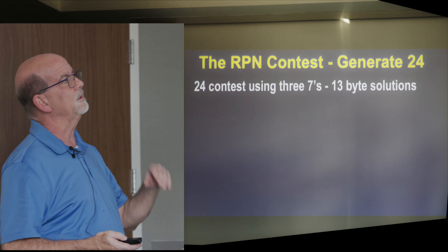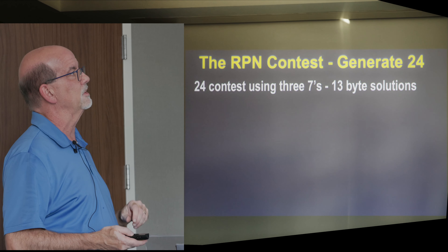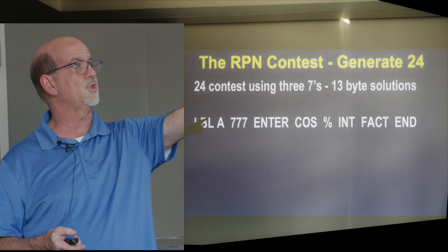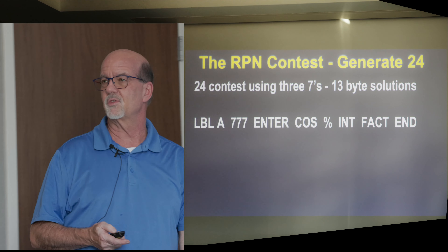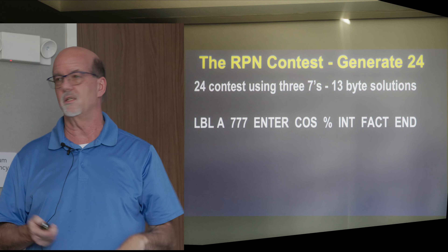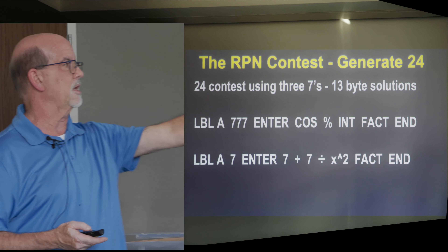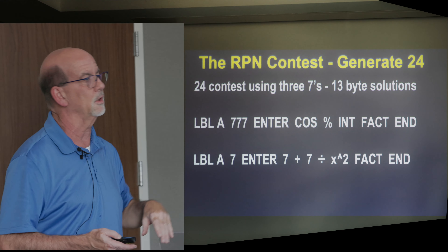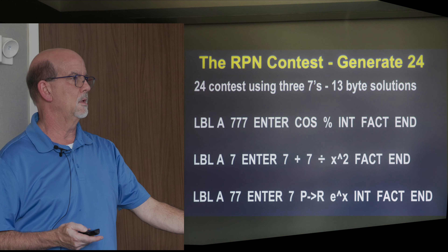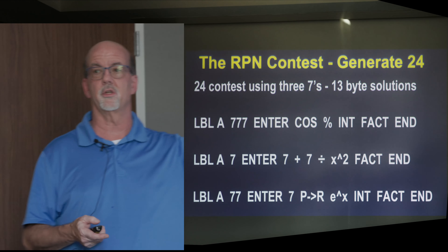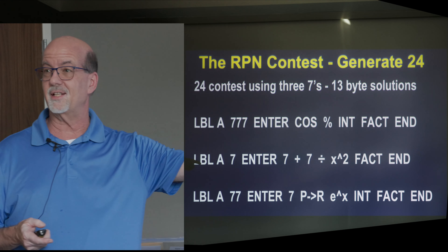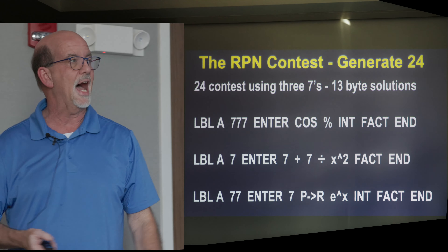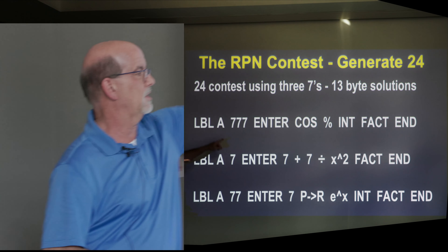A couple more 13-byte solutions getting closer. 7 7 7 enter, cosine, percent, integer, factorial — so if you start with 24 you might find ways of backing into what you need to do to get it. Here's another one: 7 enter, 7 plus, 7 divided by, squared, factorial — that gets you to a 4 and then the factorial. And then this one: 77 enter, 7, polar to rectangular, e to the x, integer, factorial. All you've got to do is get to that 4 if you want to use factorial.